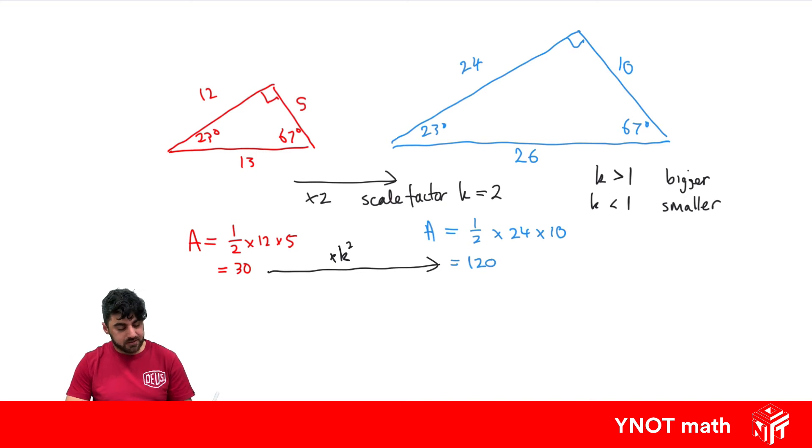And in this case, our scale factor was 2 and 2 squared is 4. And obviously multiplying 30 by 4, we get 120.